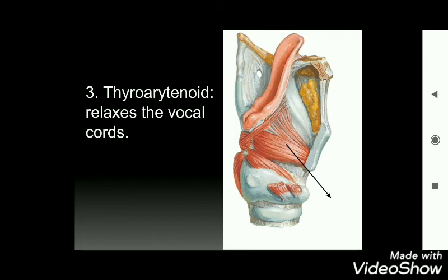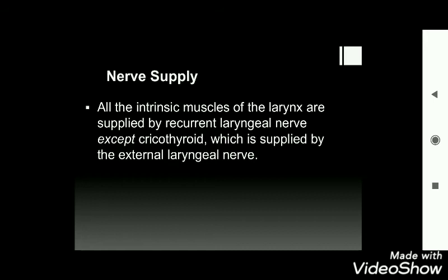Summary of the three main functions: opening and closing of the laryngeal inlet, abduction or adduction of the vocal cords, and increase or decrease in the tension of the vocal cords. All intrinsic muscles of the larynx are supplied by the recurrent laryngeal nerve, except the cricothyroid, which is supplied by the external laryngeal nerve.